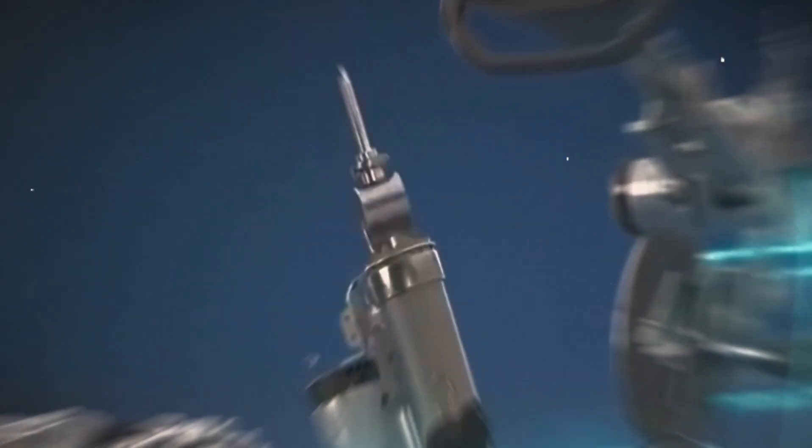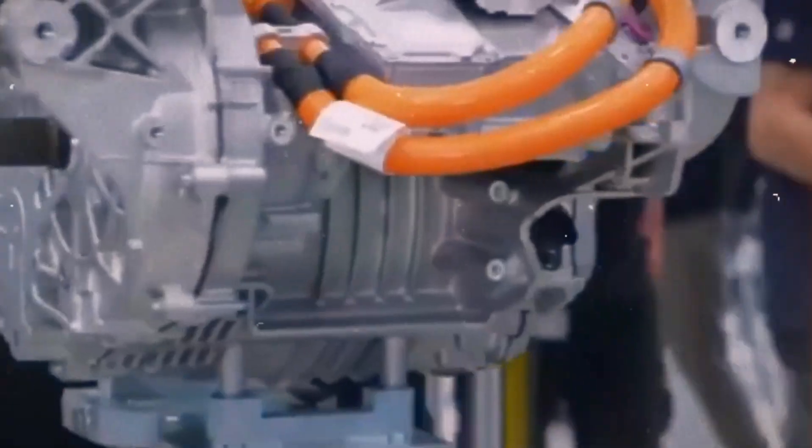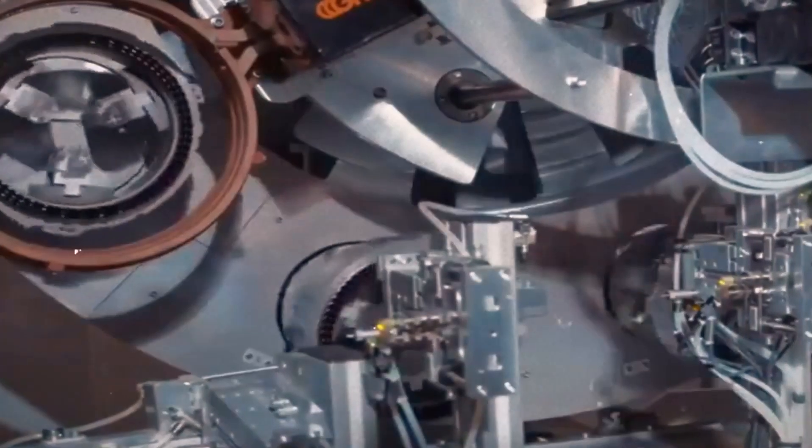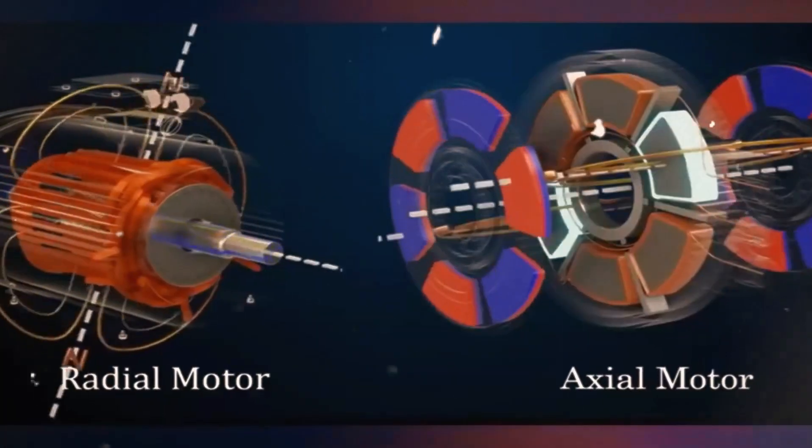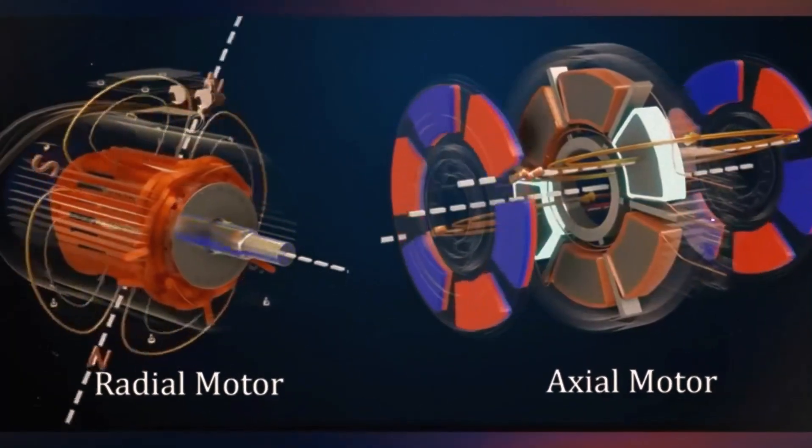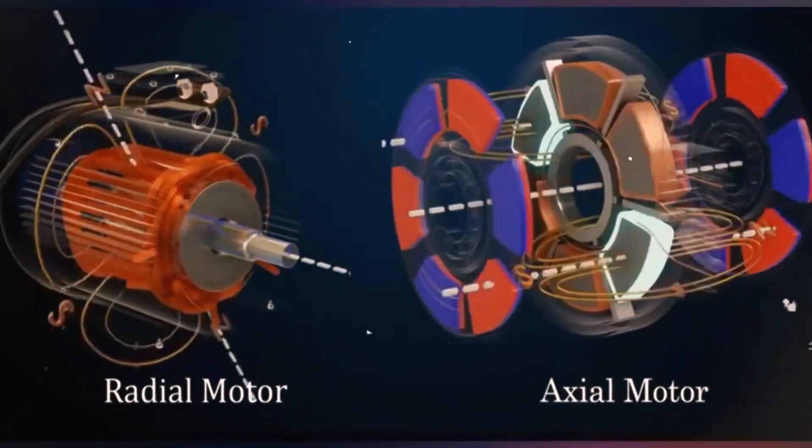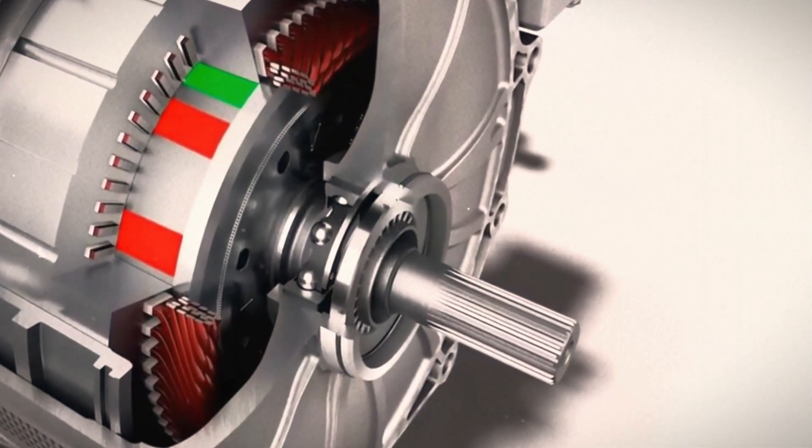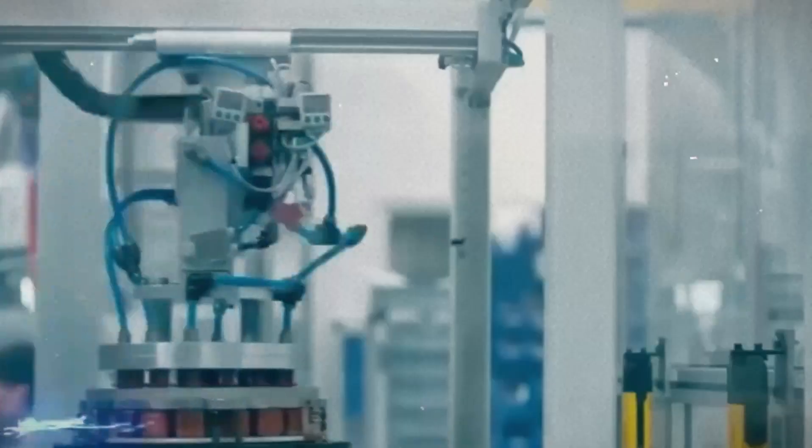Returning to our main topic, how does mechanical field weakening work? Think of it as adjusting the distance between an engine and wheels in a traditional car. In an electric motor, changing the distance between the stator and rotor adjusts torque and speed. This simpler, more intuitive method can enhance efficiency without relying solely on electronic controls. But is it truly the solution?